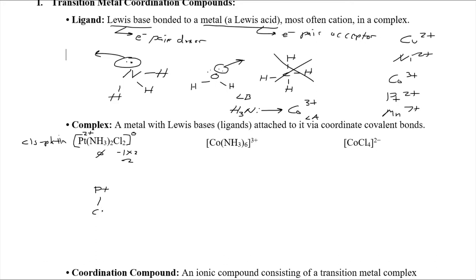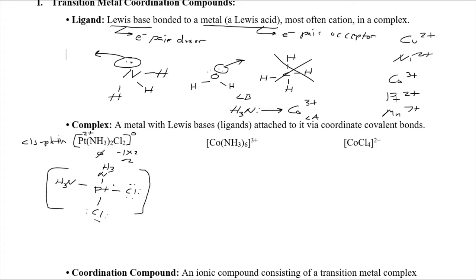We can draw the bonds to one of the lone pairs on each chloride, and then for the amine ligands it's really important to show the nitrogen as the Lewis base atom — the hydrogens don't bond to the metal, the nitrogen does. It's good habit to draw a bracket to show that these four ligands are directly bound with coordinate covalent bonds to the metal center. I always like to indicate the oxidation state of the metal and show that each chloro ligand is negative one — everything balances out, giving us a neutral metal complex.